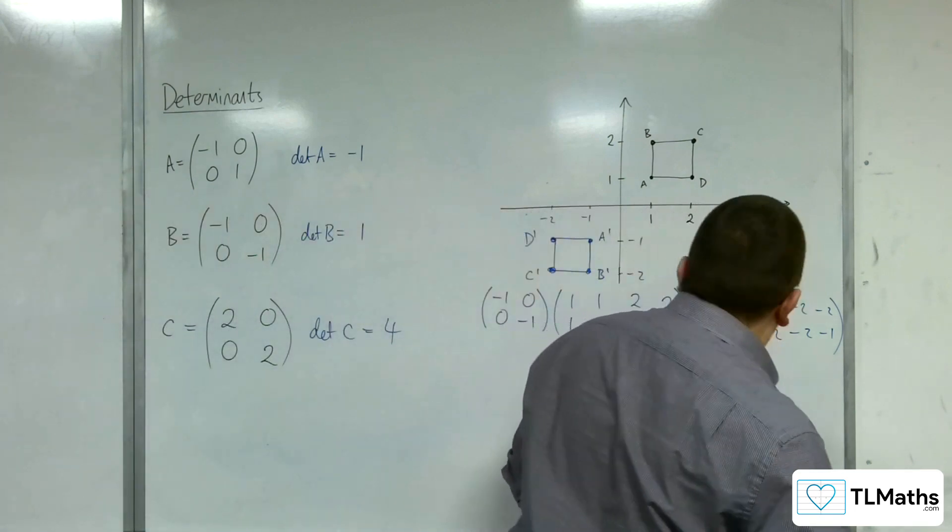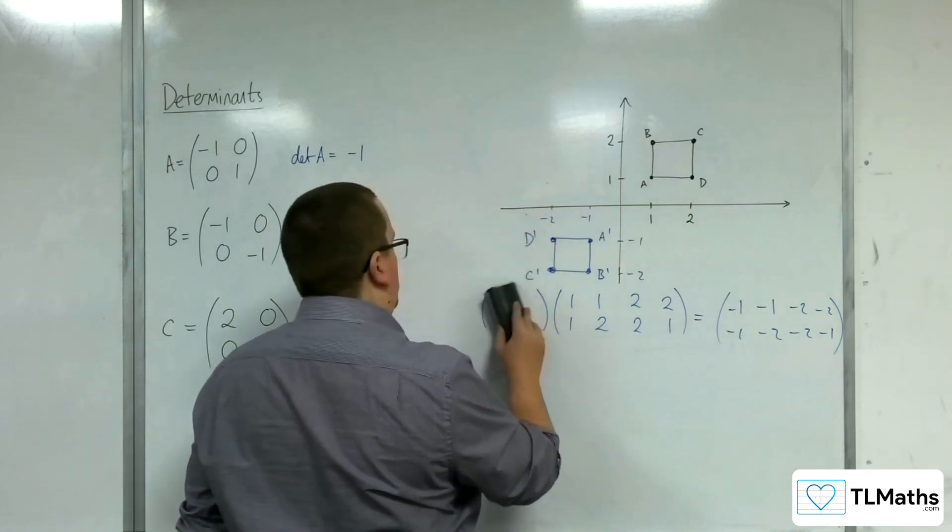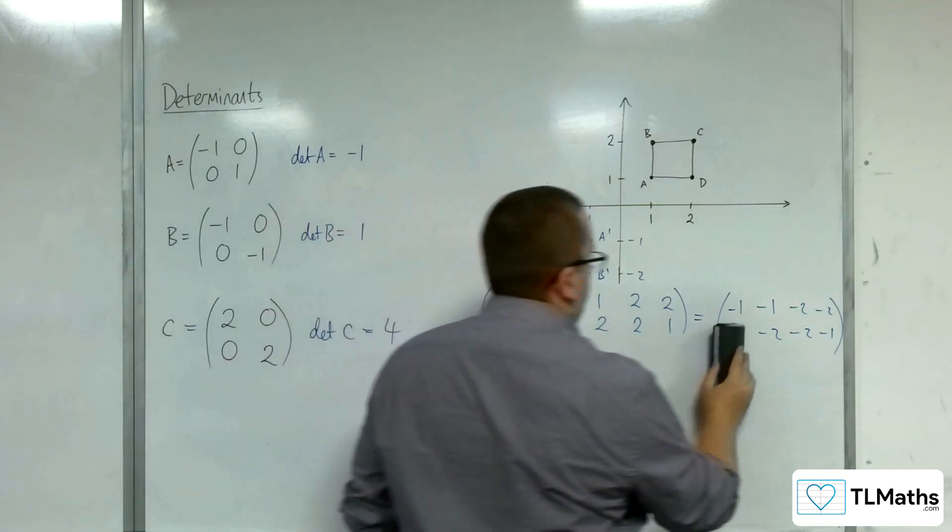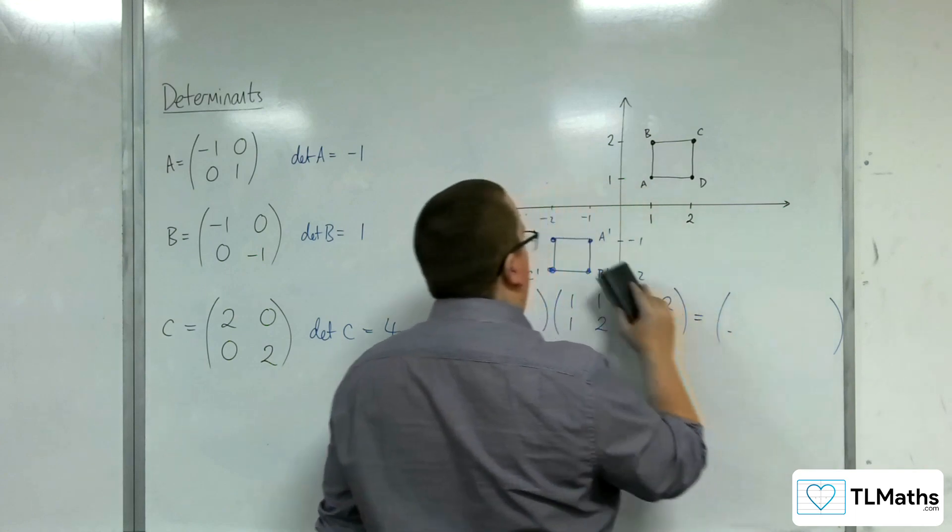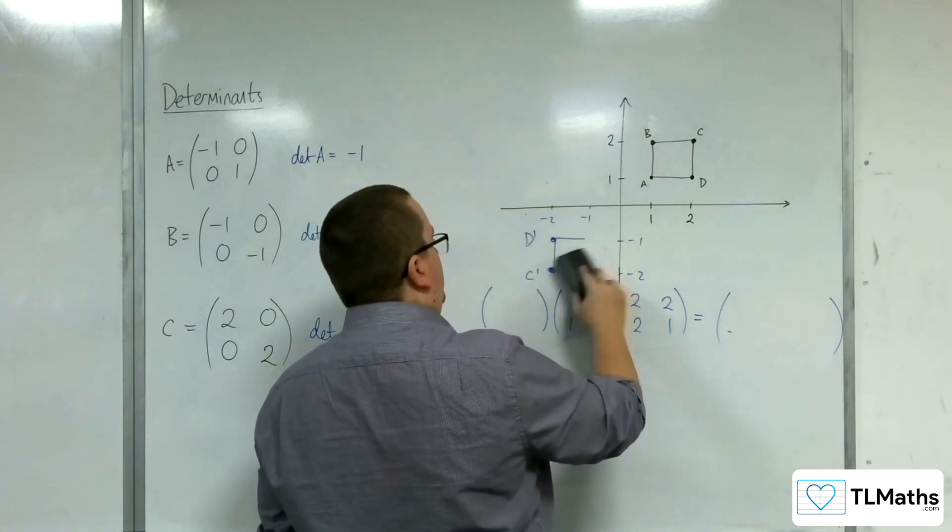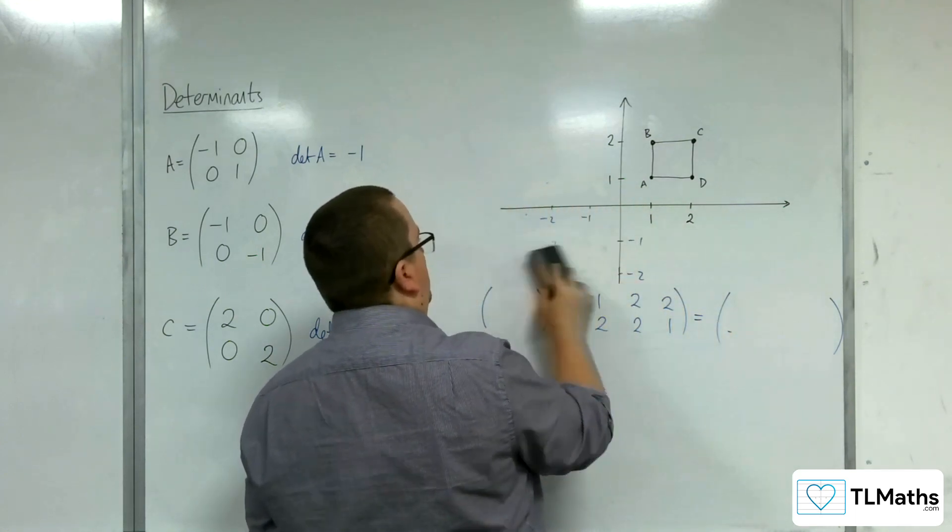Now, the last example here, matrix (2, 0; 0, 2). So we'd be expecting that the orientation would maintain.